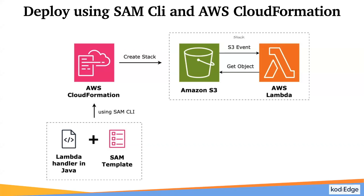Hello friends, welcome to Codage. In this session we will see how to configure event notification in the Amazon S3 bucket, so that whenever we do some changes in the S3 bucket, like creating an object or deleting an object from the bucket, it will invoke an AWS Lambda function. As you see in the diagram, in the configuration we will create an S3 bucket, a Lambda function, and we will upload an object into the S3 bucket so that whenever an object is uploaded it will call the AWS Lambda function.